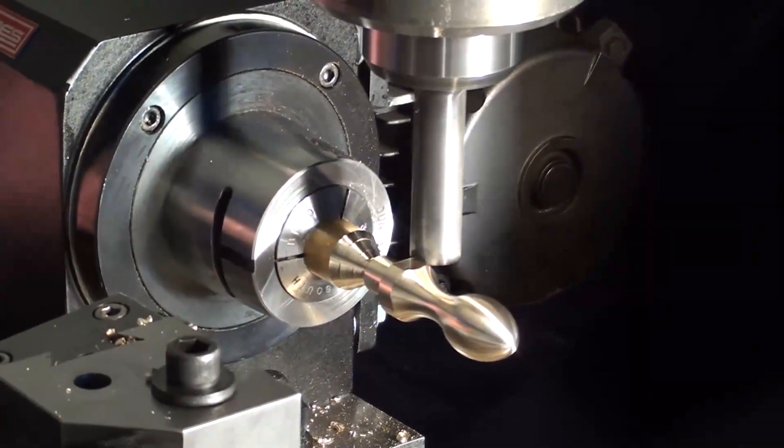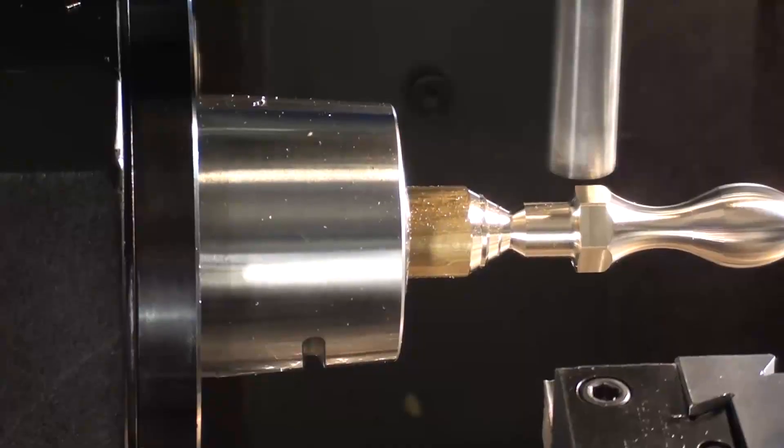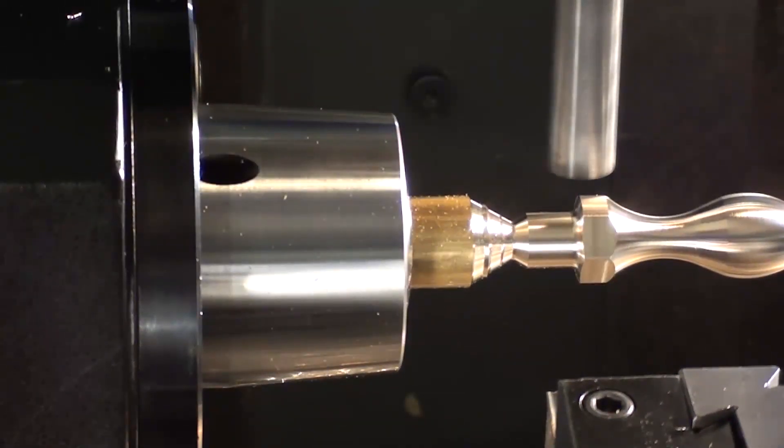In fact, with the Sturgis turning head system, you get multi-axis capability with the machine you already own.